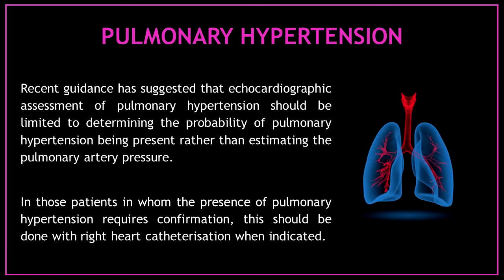Recent guidance has suggested that echocardiographic assessment of pulmonary hypertension should be limited to determining the probability of pulmonary hypertension being present rather than estimating the pulmonary artery pressure. In those patients in whom the presence of pulmonary hypertension requires confirmation, this should be done with right heart catheterization when indicated.